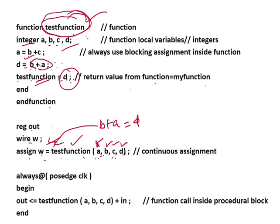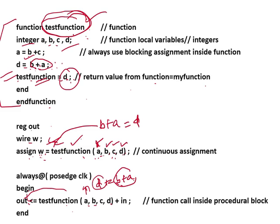Whenever there are changes in b plus a, or d, it will be assigned to w. This is a continuous assignment. Then: 'always @(posedge clock) begin out = test_function(a, b, c, d)'. Inside the always block we are calling the function. It returns the value d — which equals b plus a — and that value is assigned to 'out'.